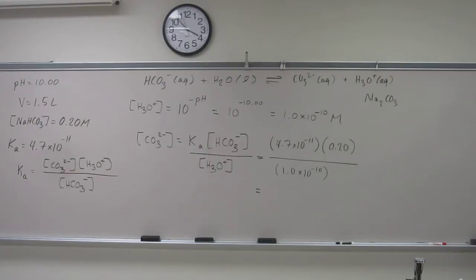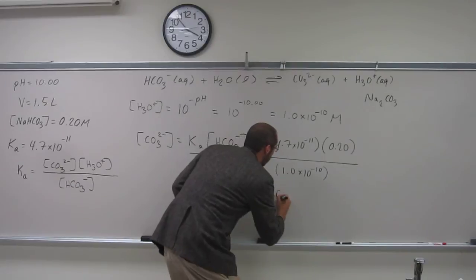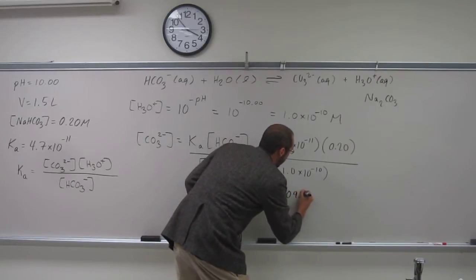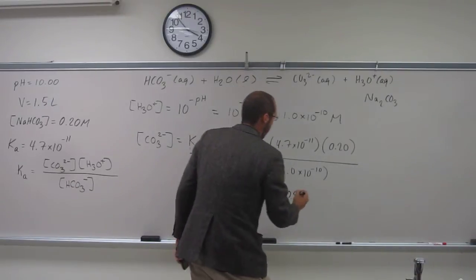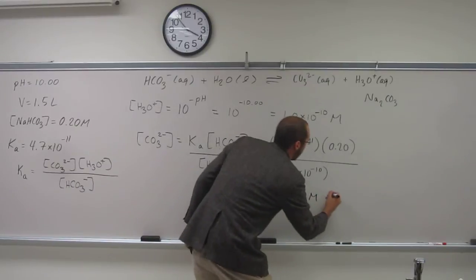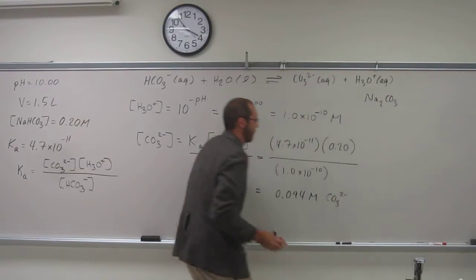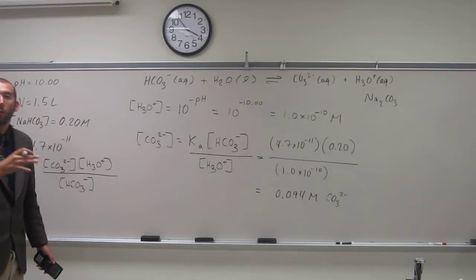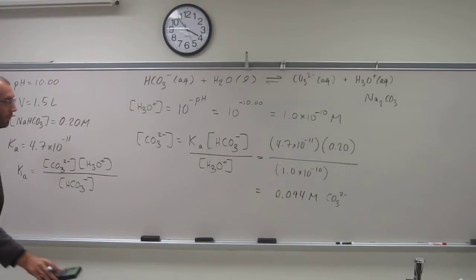4.7 times 10 to the negative 11 times 0.2 divided by 1.0 times 10 to the negative 10, and I get 0.094 molar for CO3 2 minus. That's molar.